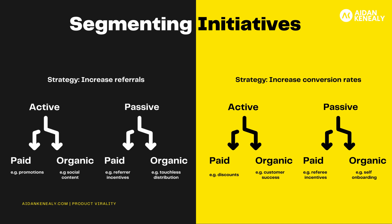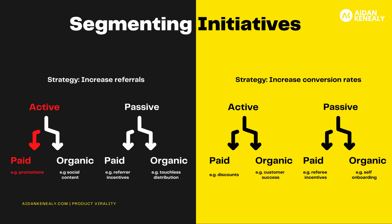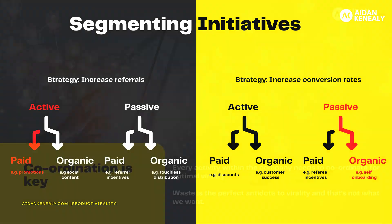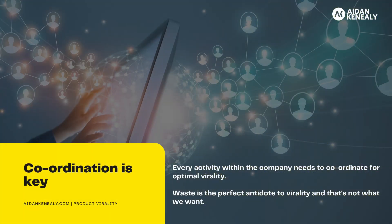We can choose which initiatives might be appropriate to the situation at hand. We don't have to use all of these initiatives to ensure viral growth, and we can pick and choose which ones might be appropriate. We might choose to allocate a budget to an active paid tactic, like promotion, to increase referrals, whilst also setting our product team KPIs around self-onboarding, which would be a passive organic initiative to increase conversion rates. Finally, and most importantly, coordination is key. Every activity within the company needs to coordinate to a broader goal and objective in order to achieve optimal virality.